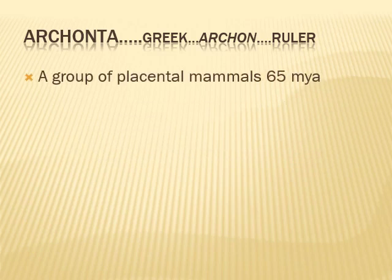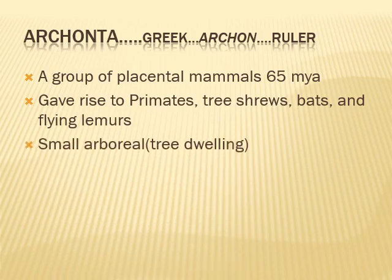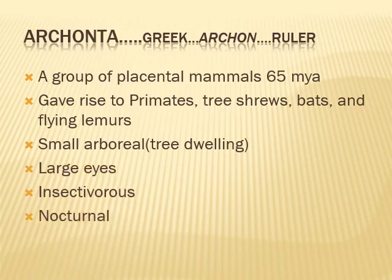The oldest known ancestor of primates is Archonta, derived from the Greek word Archon, meaning ruler. It is a group of placental mammals that emerged 65 million years ago and gave rise to primates, tree shrews, bats, and flying lemurs. They were small arboreal animals with large eyes, insectivorous and nocturnal, performing their foraging activities during night.